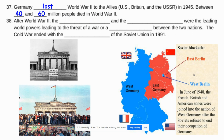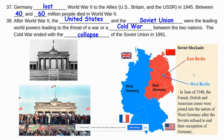After World War II, the United States and the Soviet Union were the leading world powers, and this led to the threat of war or a Cold War between these two nations. The Cold War was kind of a stalemate that started in 1945 and lasted until the Cold War ended with the collapse of the Soviet Union in 1991.